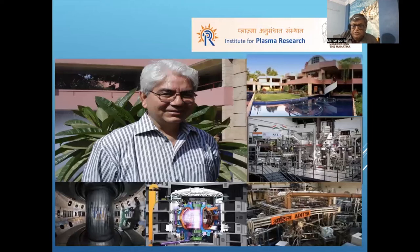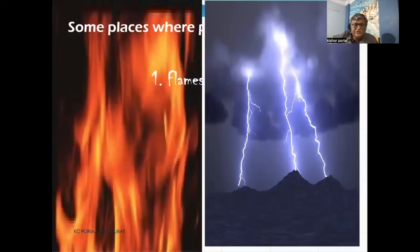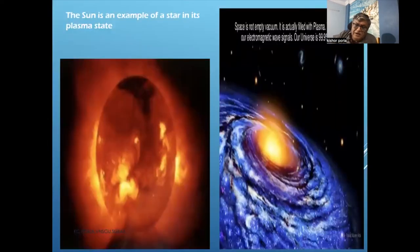A tribute to late Professor P.K. Kaw from Gujarat state — he was the founder member of the Indian Plasma Research Institute located in Gujarat, where he developed huge instrumentation at the IPR. He is considered a giant scientist of national and international repute. Plasma can be found in flames, lightning, the sun's corona, and even the centers and sides of galaxies.